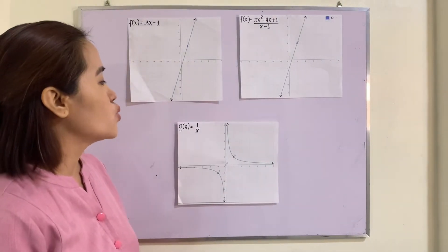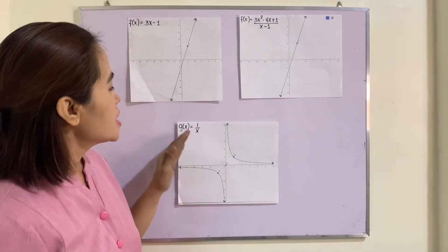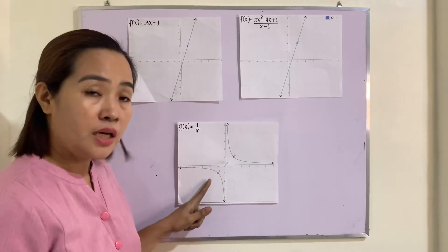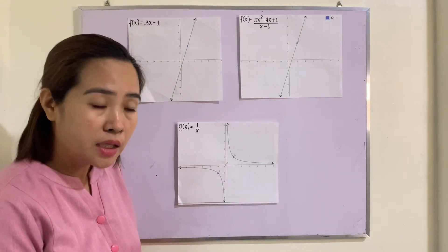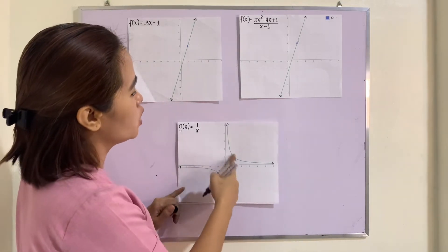What about the third? g(x) = 1/x. Is this function continuous at x = 1? Is this function continuous at x = -1? If we try to look at the graph...